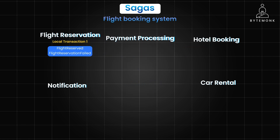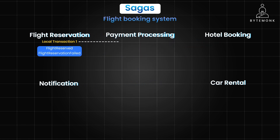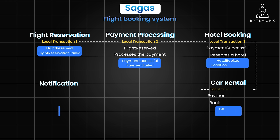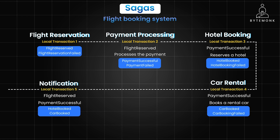Similarly, payment processing becomes local transaction 2. The payment service listens for the flight reserved event, processes the payment, and if successful emits a payment successful event; if unsuccessful, it emits a payment failed event. And so on and so forth with hotel booking, car rental, and notification transactions.